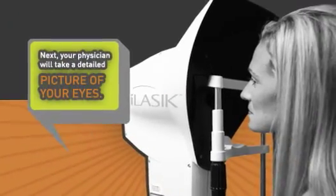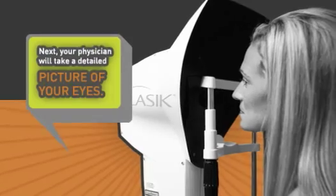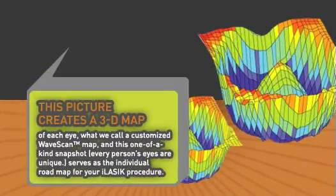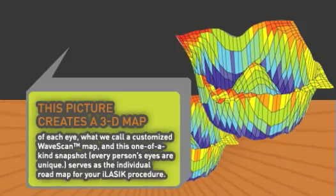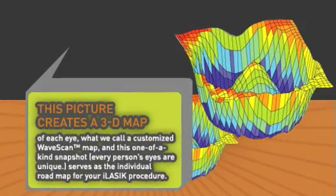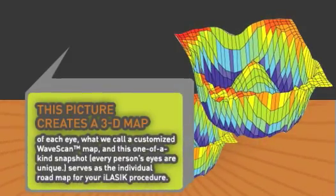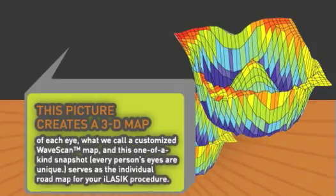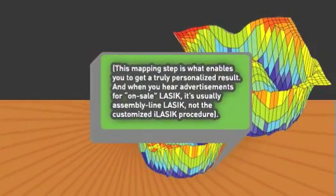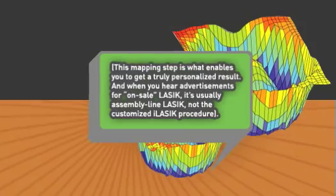Next, your physician will take a detailed picture of your eyes. This picture creates a 3D map of each eye, what we call a customized wave scan. This one-of-a-kind snapshot serves as the individual roadmap for your iLASIK procedure. This mapping step is what enables you to get a truly personalized result.